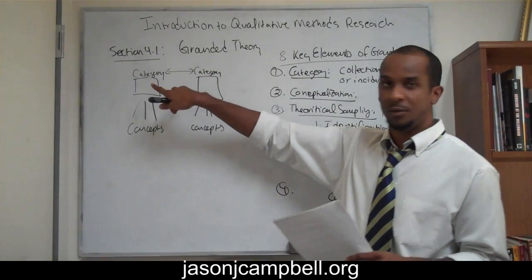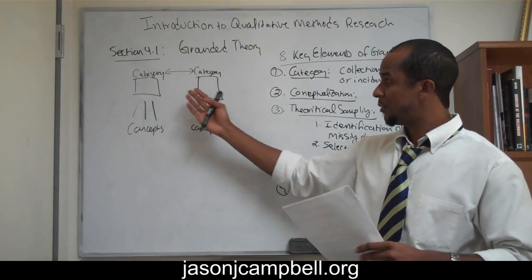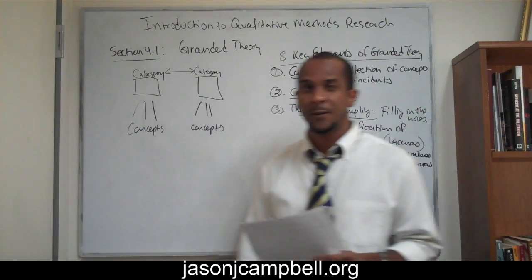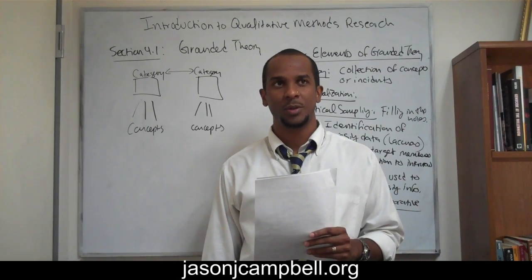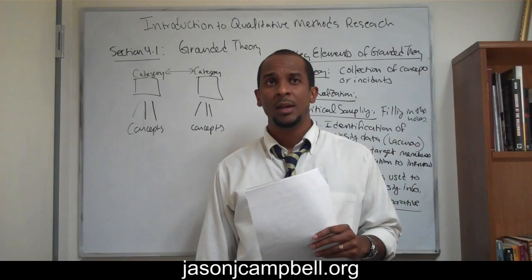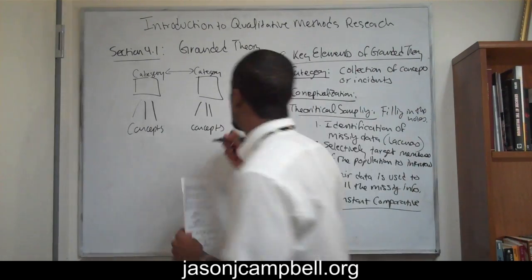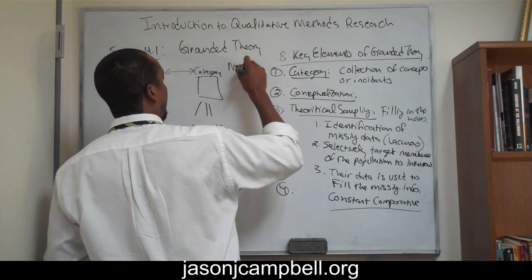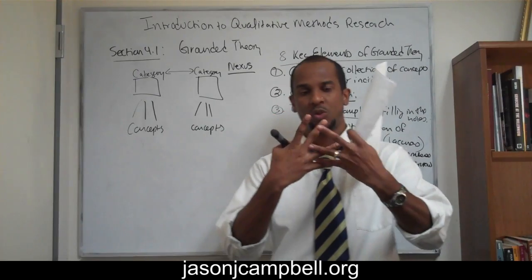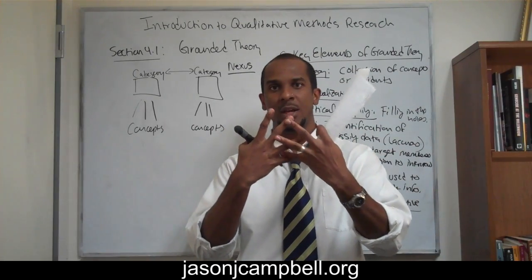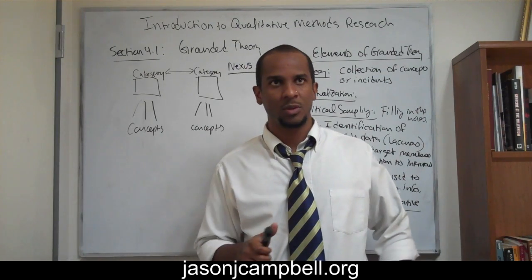What I do in a constant comparative is that I'm comparing these categories. Most of the categories, if not all of the categories within your grounded theory — your final theory that you're going to propose — are going to have to create what's known as a theoretical nexus. You're going to want to create a web of interconnection between different categories. This is just extremely general and terse.